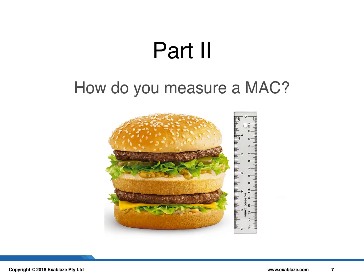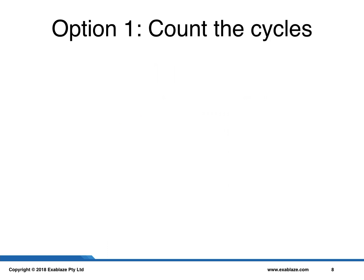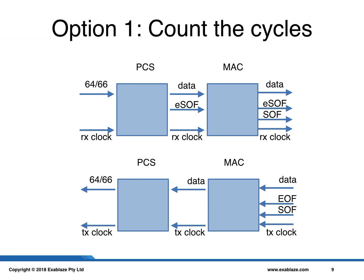The question we are trying to answer in this part is: how do you measure the performance of an Ethernet MAC? Specifically in this case, we mean the latency of a soft Ethernet MAC provided in FPGA logic. The first and most obvious option is to simply count the number of cycles used by the logic. Looking at the logic components provided, these include the PCS and the MAC.